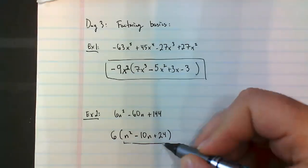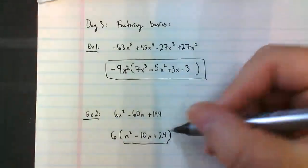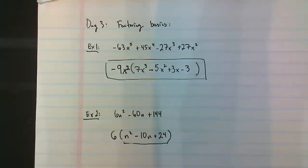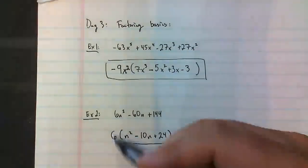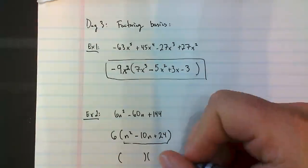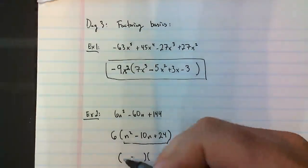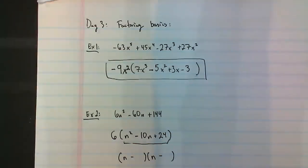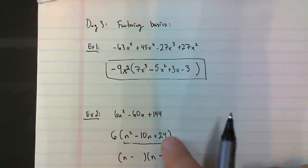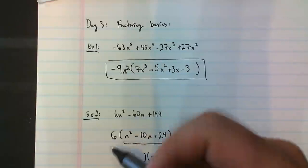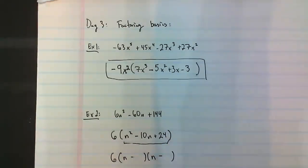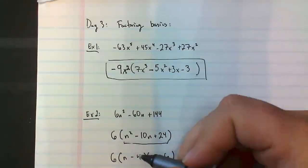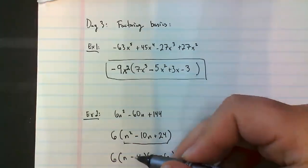Most people would say they're done, but the inside can be factored further. We need to find the two numbers that multiply to positive 24 but add to negative 10. That's tricky because when you factor this, the signs are both going to be negative. We have our N here — N times N gives that N squared — and we're just looking for the two numbers that multiply to 24 but add to negative 10.